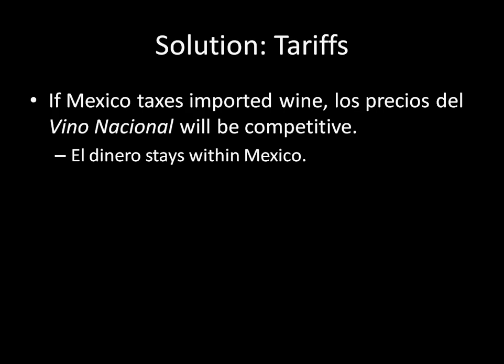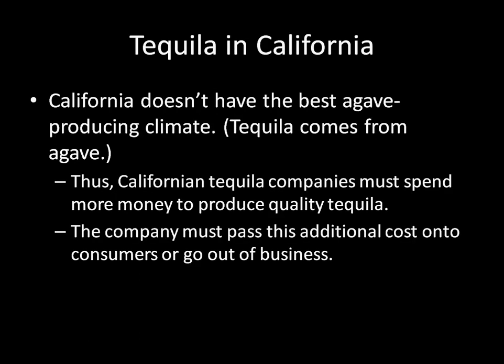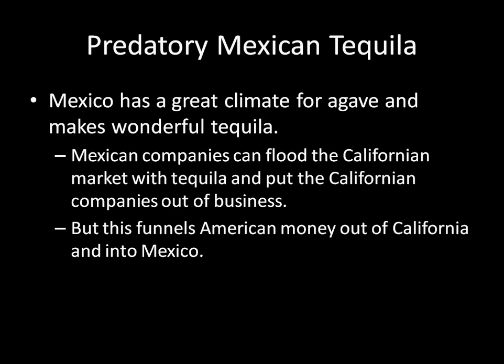On the other hand, consider tequila makers in California. California doesn't have the best agave-producing climate, so a Californian tequila company would have to spend much more money to produce quality tequila than a Mexican tequila company. But if you're a predatory Mexican tequila company, you live in Mexico, you have a great climate for agave, and you can make wonderful tequila. So Mexican tequila companies can flood the California market, drive Californian companies out of business — that's great for Mexico, but bad for California because it funnels American money out of California and into Mexico.